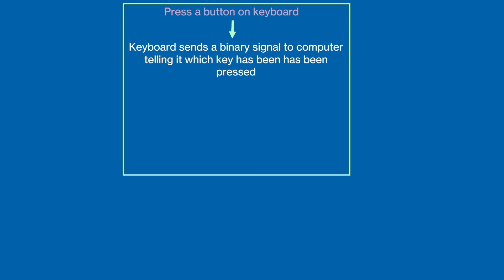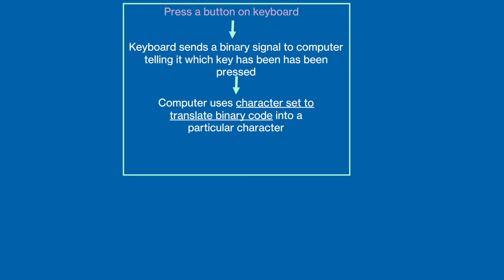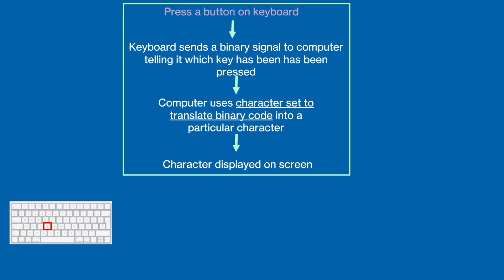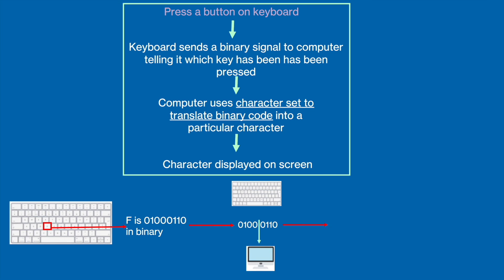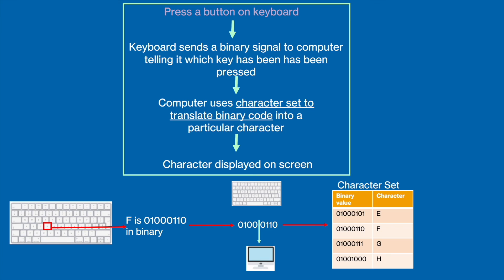So firstly, your keyboard will send a binary signal to the computer, telling it which key has been pressed. Then the computer will use the character set to translate that binary code into a particular character. Lastly, the character will be displayed on the screen. For example, if you clicked on the letter F on your keyboard, it will send the binary code for F, which is 0100110, to the computer, which will find the character that matched the binary code, see that the code corresponds to the character F, and then display that character on your computer screen.